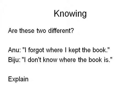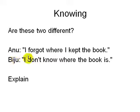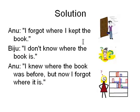Is knowledge different from believing something? Let's look at an example. Anu says 'I forgot where I kept the book.' Biju says 'I don't know where the book is.' Anu is saying she knew where the book was and now she doesn't. Biju says he doesn't know where the book currently is — it doesn't say anything about the past. So there is a difference between the two. Anu: 'I knew where the book was but now I forgot where it is.'